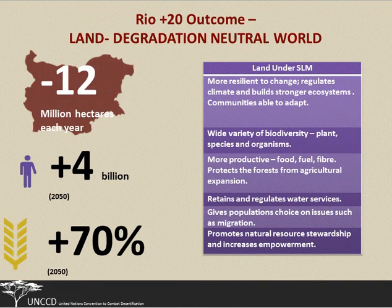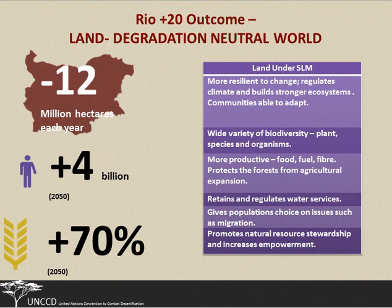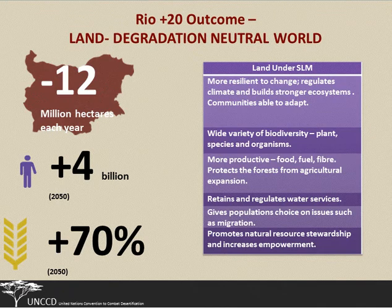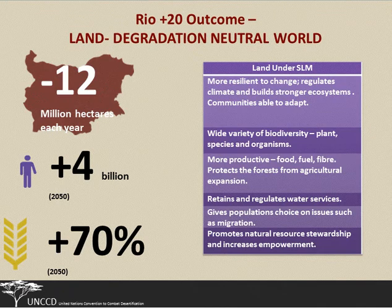As these numbers I'm sure you're very familiar with now: we are losing about 12 million hectares of land each year to desertification and land degradation processes. By 2050, we're going to have an extra 4 billion mouths to feed, and that's going to require increases of production of around 70%. UNCCD makes the case that land under sustainable land management will be more resilient to climate change, because it regulates the climate and builds stronger ecosystems. That means communities are better able to adapt, contribute to biodiversity, get more production — food, fuel, fibre — protect forests, retain and regulate water services.